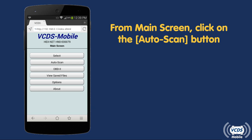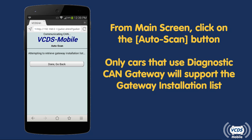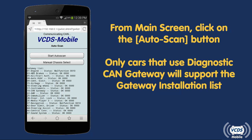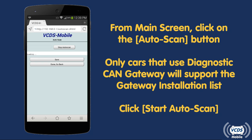From the main menu of VCDS Mobile, click on the Auto Scan button. VCDS Mobile will first try to retrieve a gateway installation list. Only vehicles that use a diagnostic CAN gateway will support this. Click on the Start Auto Scan button to begin.